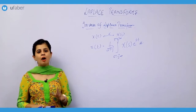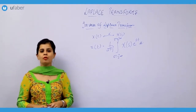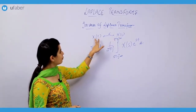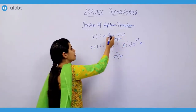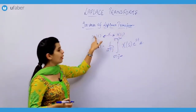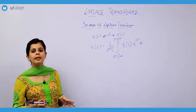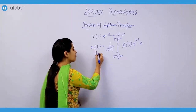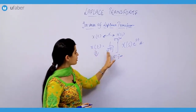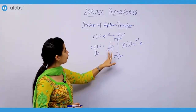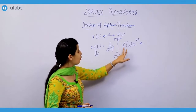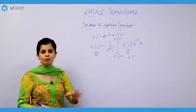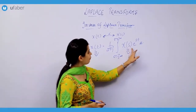Now let us move ahead and see how we are going to find out the inverse Laplace transform. As I have told you, when you are moving from time domain to frequency domain, this process is reversible — you can come back from X(s) to x(t). So finding the inverse Laplace transform: you can get back the value of x(t) from X(s) by this formula: x(t) = 1/(2πj) times the integration of X(s), which is the Laplace transform, into e raised to the power s·t, ds.